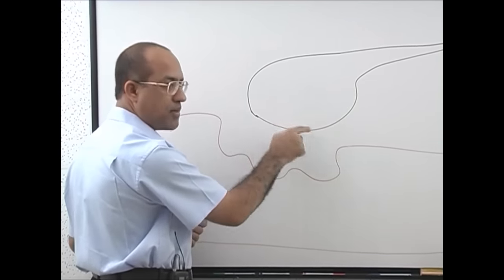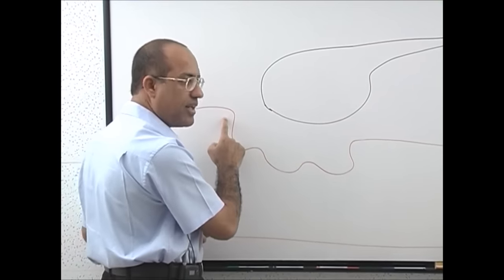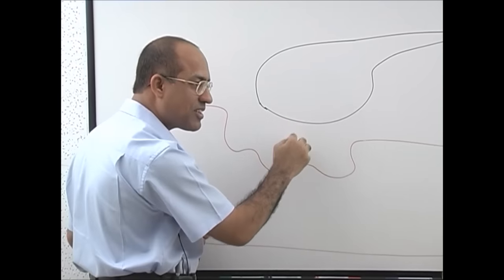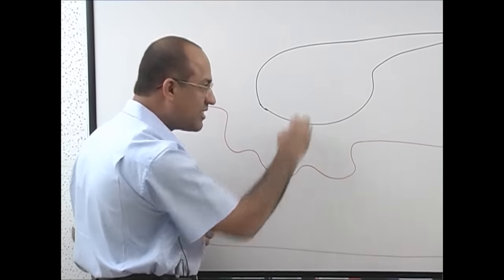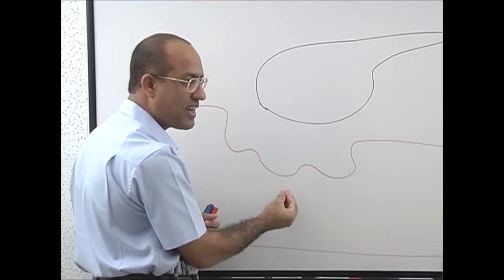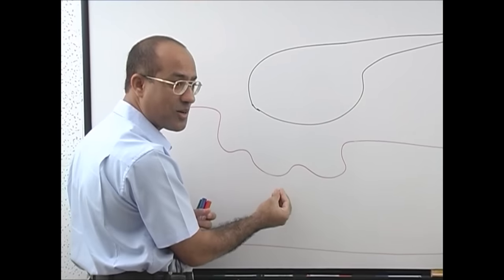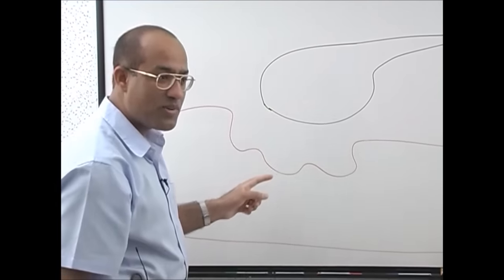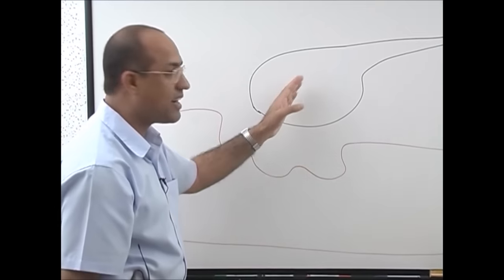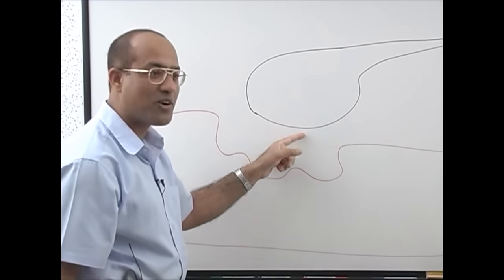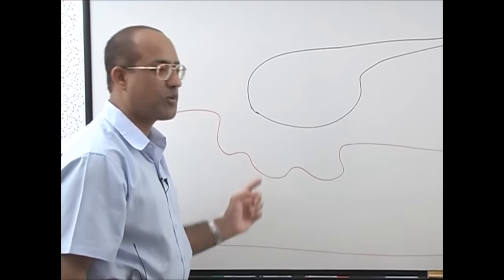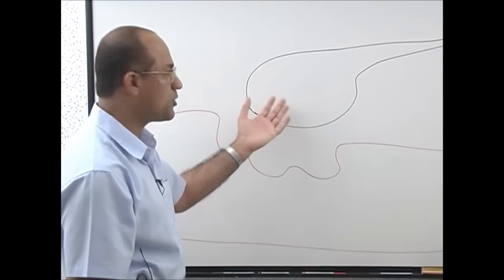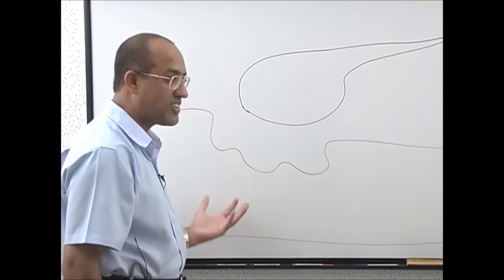The nerve ending membrane is called the pre-synaptic membrane and the muscle membrane is the post-synaptic membrane. The pre-synaptic membrane releases chemical substances and the post-synaptic membrane has receptors to receive them — it is one-way transmission only. Neurons always talk and muscles always listen; you cannot get reverse direction transmission at neuromuscular junctions.